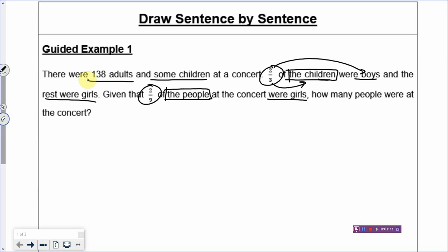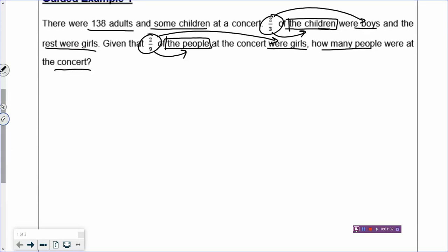If they are referring to the same group, you can make the denominator the same. Otherwise you can't. But can we still draw the model? Yes, we can, because we are going to break up again. The denominator is the total parts of the people and two parts of them were girls. So, how many people were there at the concert? After you have highlighted and done the arrow pointing, now we draw the model.